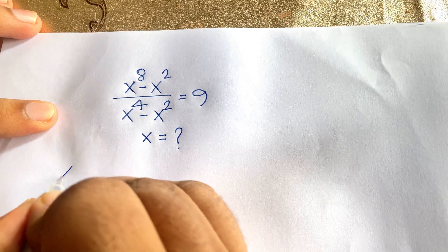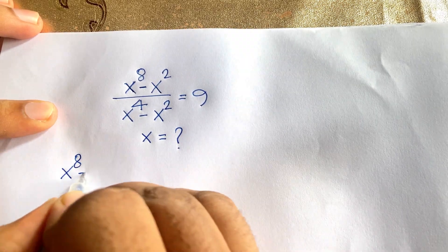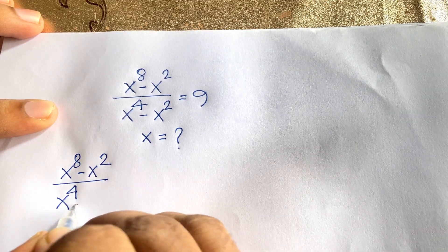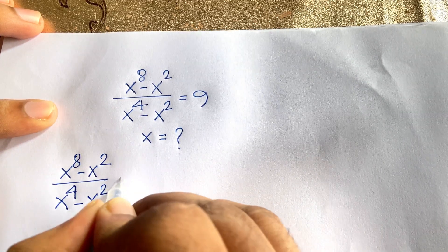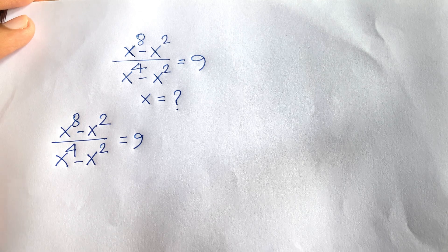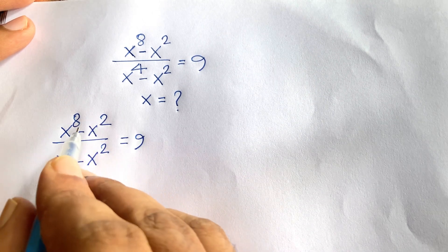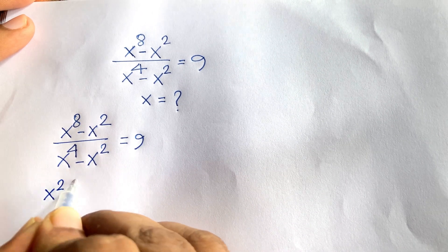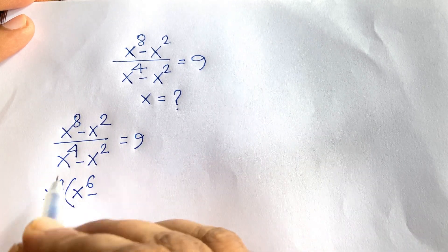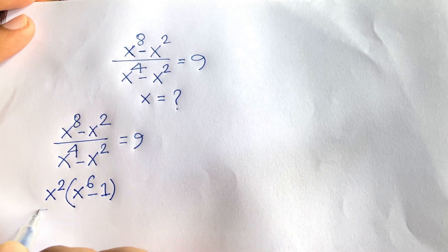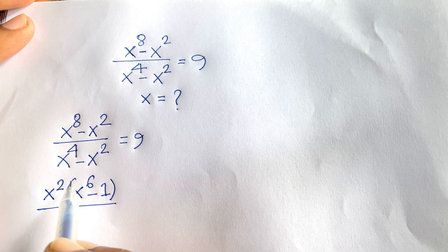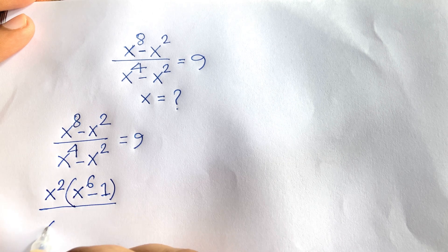So our expression is (x^8 - x^2) / (x^4 - x^2) = 9. I can see that x^2 is common in the numerator. Factoring it out, the numerator becomes x^2(x^6 - 1), and dividing gives x^6 - 1. In the denominator, x^2 is also common, giving x^2(x^2 - 1).